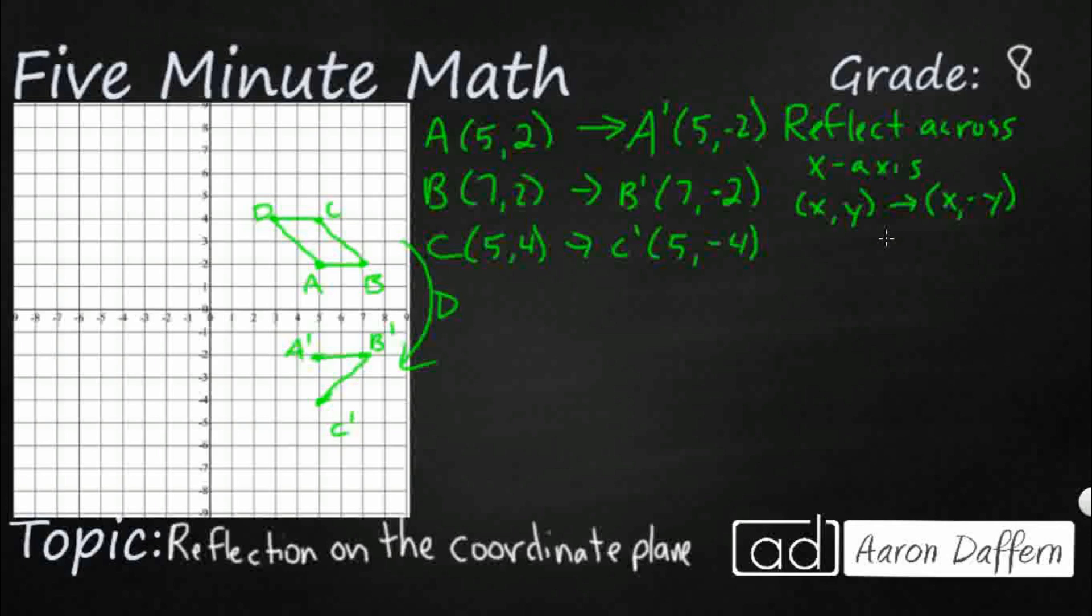And then D is 3,4. So we're going to slide that over to D prime, and that is going to be 3, negative 4. So 3, negative 4. There's my D prime. And so as you can see, we've got a pretty good reflection because we're reflecting it right across our x-axis. It looks like a mirror. At least that's what it's supposed to act like.